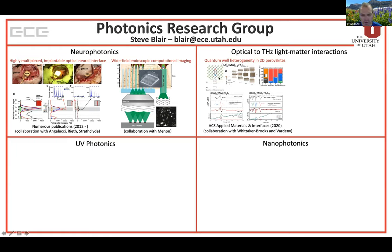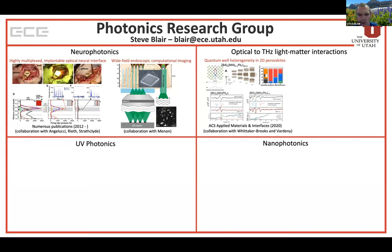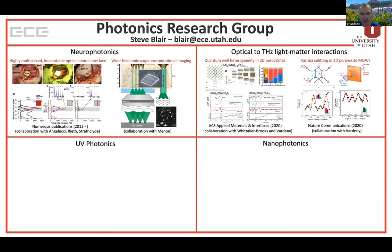Some of these materials — the Ruddlesden-Popper type — can naturally form multi-quantum well structures. We can control the thickness of the quantum wells by the number of lead iodide layers in the structure, but these are not always pure phase structures. Ideally we'd want uniform quantum wells throughout the thickness of the multi-quantum well stack, but we can have high-temperature phase, low-temperature phase, and mixed phases. We've used a combination of electroabsorption spectroscopy and more conventional optical spectroscopy of the excitonic features of these quantum wells to determine the phase composition as a function of the intended quantum well thickness, which will hopefully help design better optoelectronic devices.